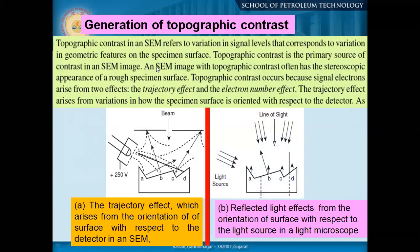Topographic contrast in SEM refers to variation in signal levels that correspond to variation in geometric features on the specimen surface. A SEM image with topographic contrast has a stereoscopic appearance. The topography contrast occurs because signal electrons arise from two effects: the trajectory effect and the electron number effect. The trajectory effect arises from variation in how the specimen surface is oriented with respect to the detector. The electron number effect relates to how many electrons reach the detector.